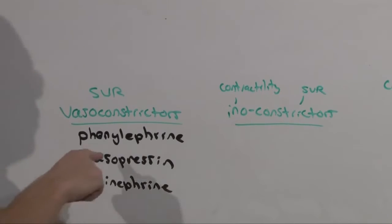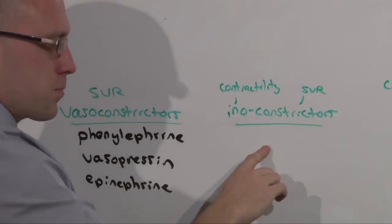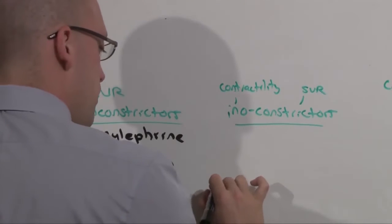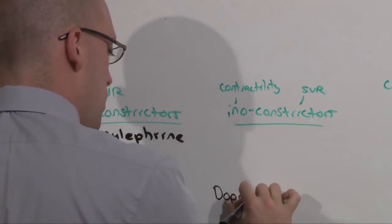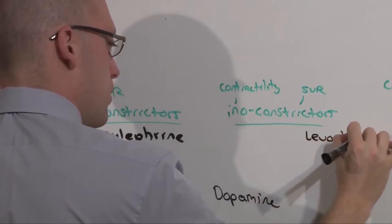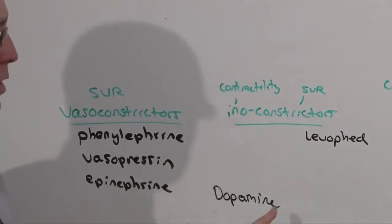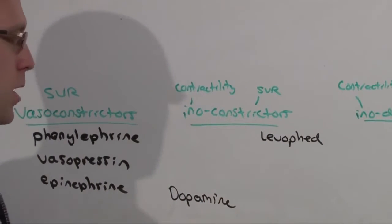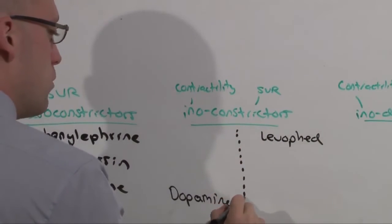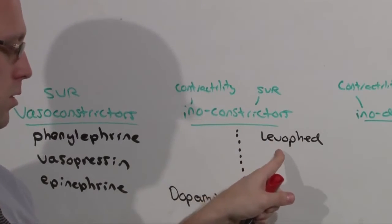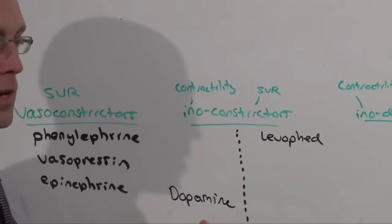Vasoconstrictors: think phenylephrine, vasopressin, and epinephrine. For the innoconstrictors, there are two, levophed and dopamine. And the way I draw them is a little off-center. Both of these can act as potent vasoconstrictors. Both of these have some inotropic activity. But levophed is more of an inotrope and less of a vasoconstrictor than dopamine.